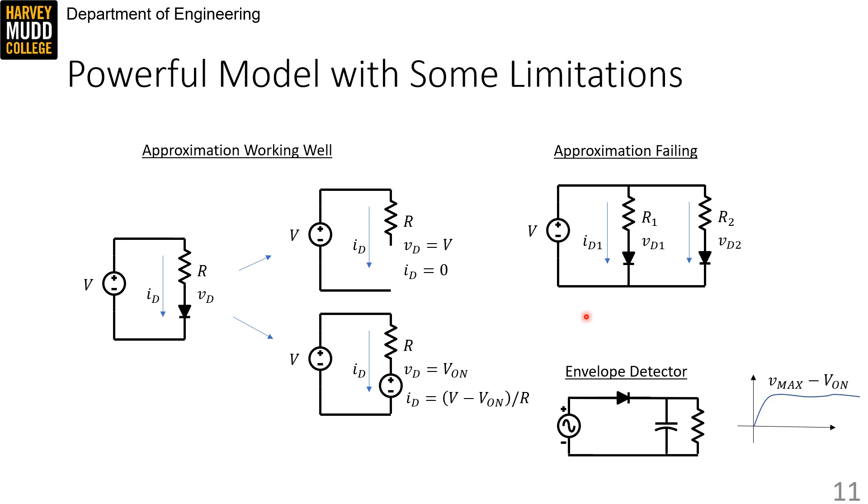However, this model works well for lots of situations, including one classic one called an envelope detector that I've pictured on the bottom here. The diode in the envelope detector allows the capacitor to be charged when the input sine wave is increasing, but prevents it from discharging when the input sine is decreasing.